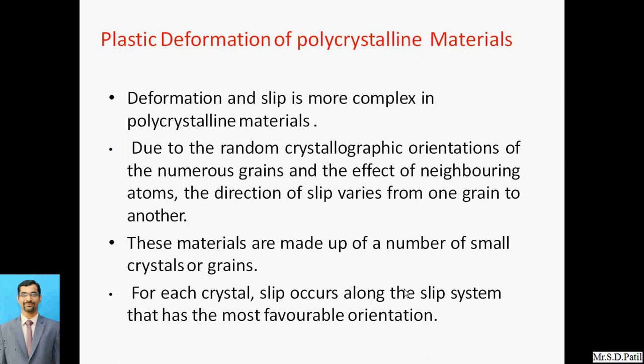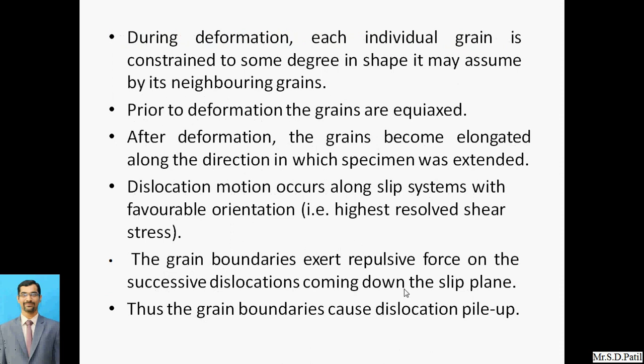In a single crystal, the slip direction does not vary. But in polycrystalline material, neighboring atoms try to constrain the movements or deformation, putting forces on one another. That's why the direction of slips varies from one grain to another. These materials are made up of a number of small crystals or grains, and for each crystal, slip occurs along the slip system that has the most favorable orientation.